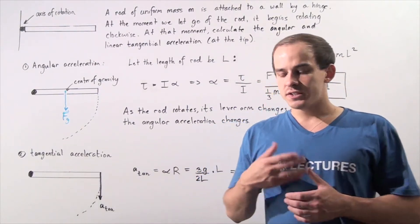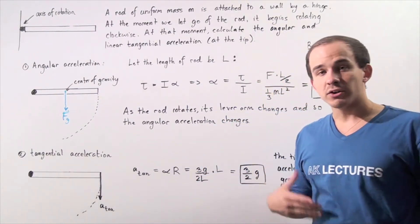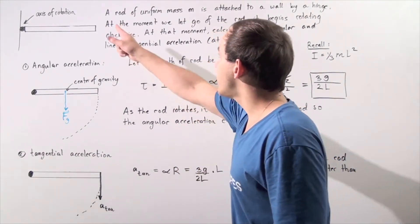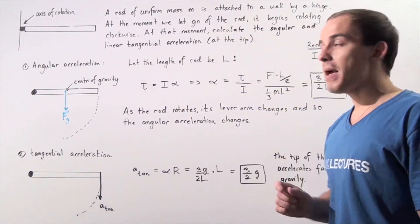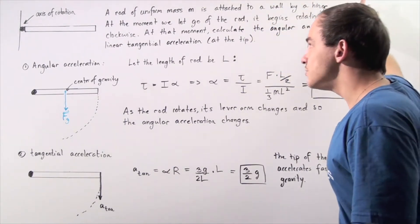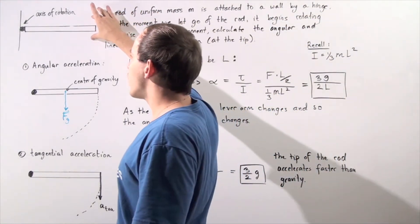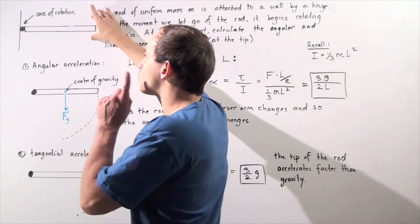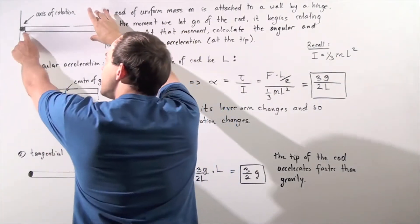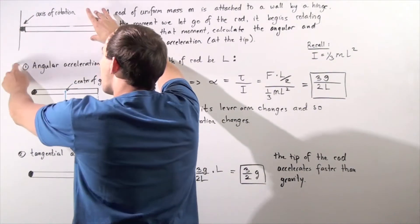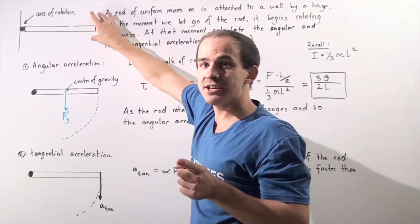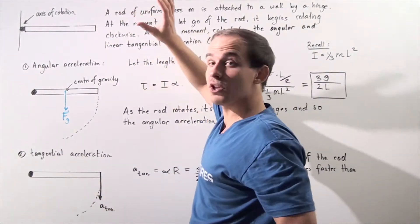In this example, we are going to deal with the dynamics of a rotating rod. Let's suppose that a rod of uniform mass M is attached to a wall by a hinge. We're holding our rod along the x-axis. The rod has mass M and is attached to the hinge, which is attached to a wall. The hinge acts as an axis of rotation.